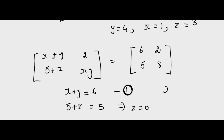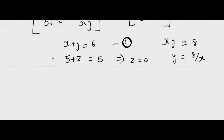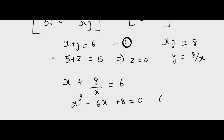Also, XY equals 8, so Y equals 8 divided by X. Substituting into the first equation: X plus 8 by X equals 6, giving X squared minus 6X plus 8 equals 0. On factorizing: (X minus 2)(X minus 4) equals 0, so X can be 2 or 4.